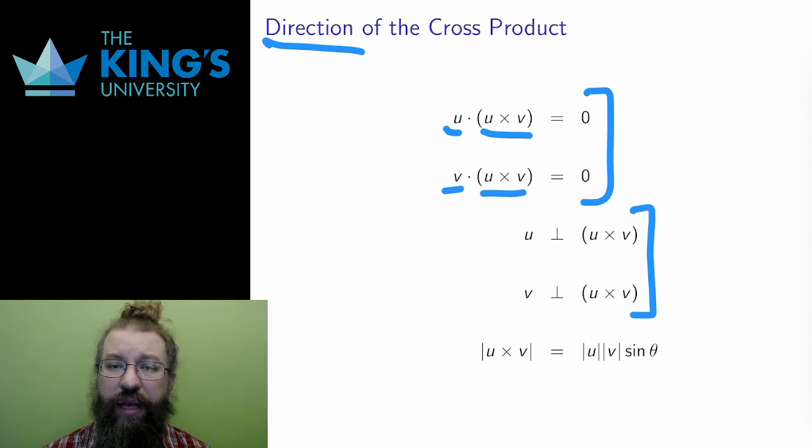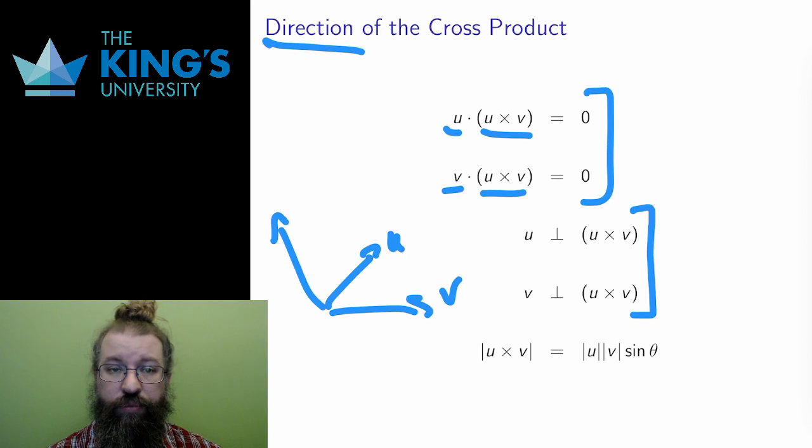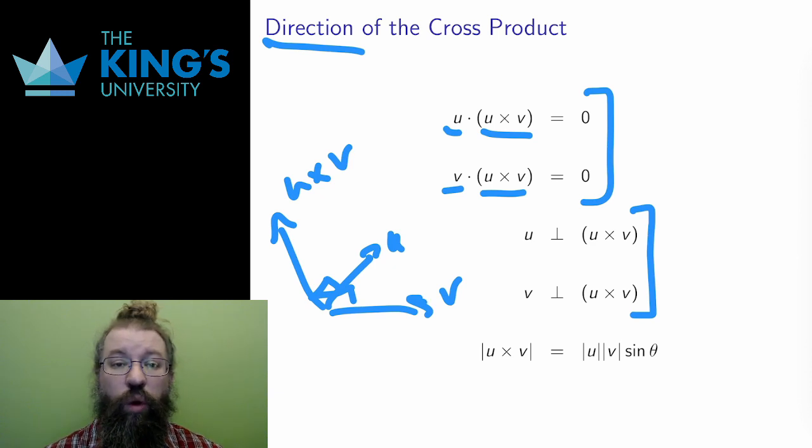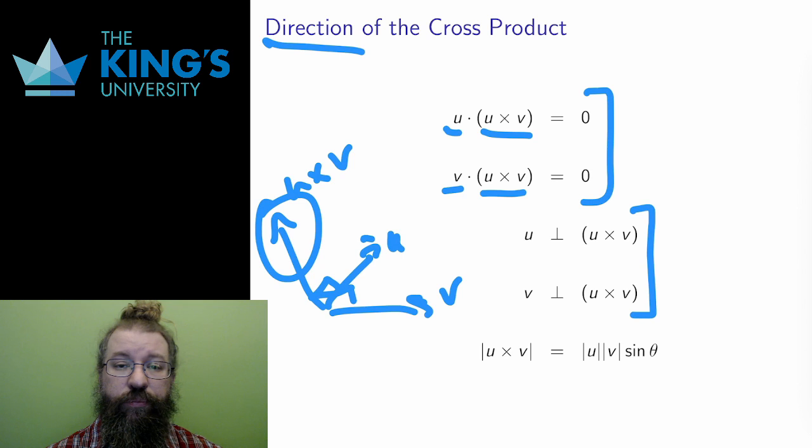This is the main thing the cross product accomplishes. It makes a vector that is perpendicular to both inputs. In three dimensions, once you have two directions, there is only one third direction remaining. The cross product finds that direction. Being able to efficiently construct a third perpendicular direction is a very valuable operation, useful in many geometric situations.